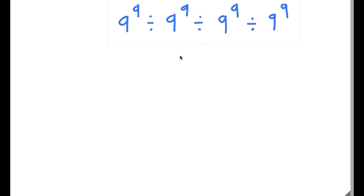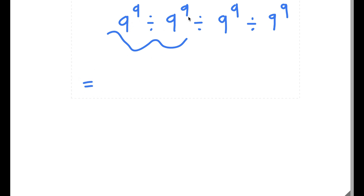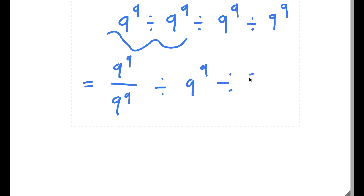So in this problem, I have 9 to the power of 9 divided by 9 to the power of 9, divided by 9 to the power of 9, divided by 9 to the power of 9. What I'm first going to do is simplify this in parts. Let's first simplify 9 to the power of 9 divided by 9 to the power of 9 — that's simply 9⁹ over 9⁹, divided by 9⁹ divided by 9⁹.